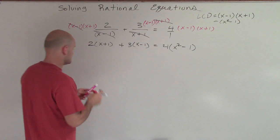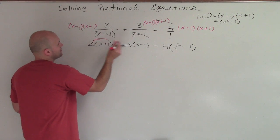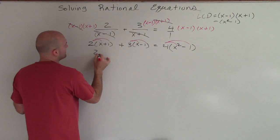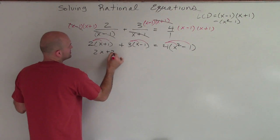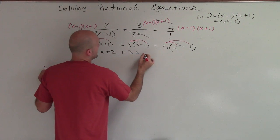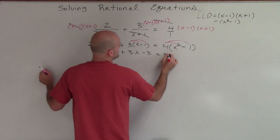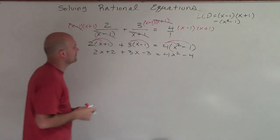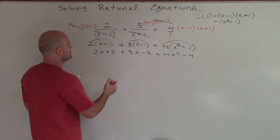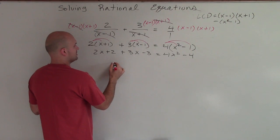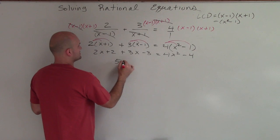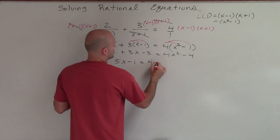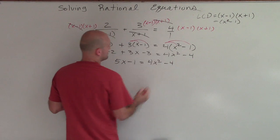Now we just need to apply the distributive property. So therefore I have 2x plus 2 plus 3x minus 3 equals 4x squared minus 4. Now I can combine my two terms, which gives me 5x minus 1 equals 4x squared minus 4.